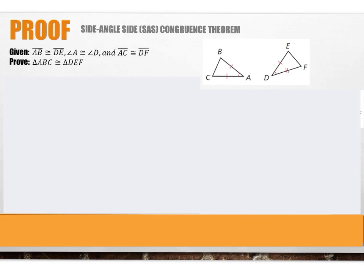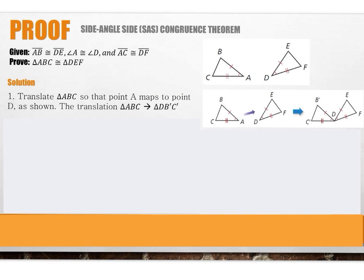We're going to prove the side-angle-side congruence theorem. We're given that side AB is congruent to DE, angle A is congruent to angle D, and side AC is congruent to side DF — the two sides and the included angle. Step one: translate triangle ABC so that point A maps to point D, as shown. This gives us triangle DB prime C prime.